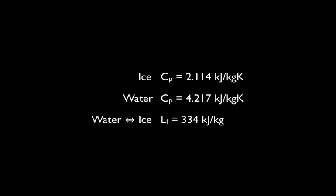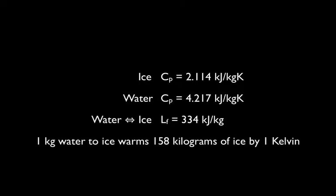This water is then warmer than its surroundings, and will transfer heat to them. If the water refreezes in the snowpack, it releases 334 kJ for every kilogram, which, given the specific heat capacity of ice, means that approximately 158 kg of ice can be warmed by 1 Kelvin. This process brings the subsurface snowpack closer to melting point before it has contacted the warm air above.